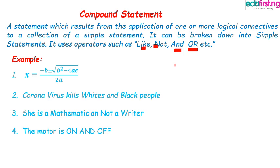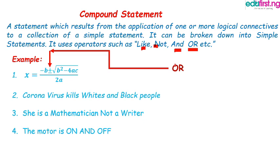For example, the quadratic formula: x equals minus b plus or minus square root of b² minus 4ac, divided by 2a. This is a logical statement — it has been proven. This is a quadratic formula. You can check out our previous lesson to really understand how to derive a quadratic formula. This is a compound statement because it has an operator: OR. This statement can be broken down into two simple statements — either x equals minus b plus square root of b² minus 4ac divided by 2a, or x equals minus b minus square root of b² minus 4ac divided by 2a.